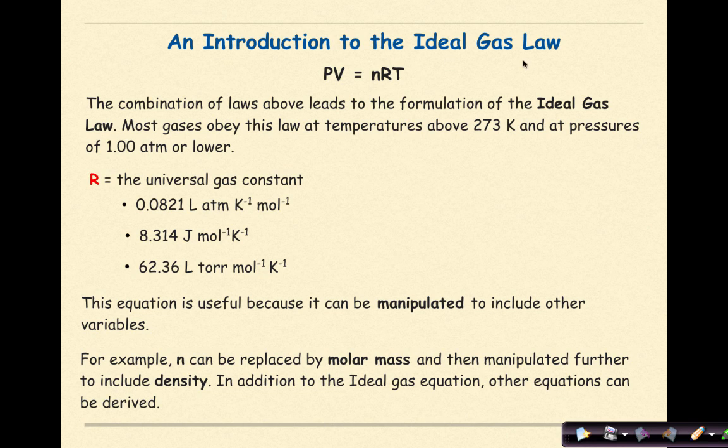An introduction to the ideal gas law, otherwise known as PV equals nRT. The combination of laws above, referring to the gas laws that we have discussed previously, leads to the formulation of the ideal gas law. Most gases obey this law at temperatures above 273 K and at pressures of 1 atmosphere or lower.